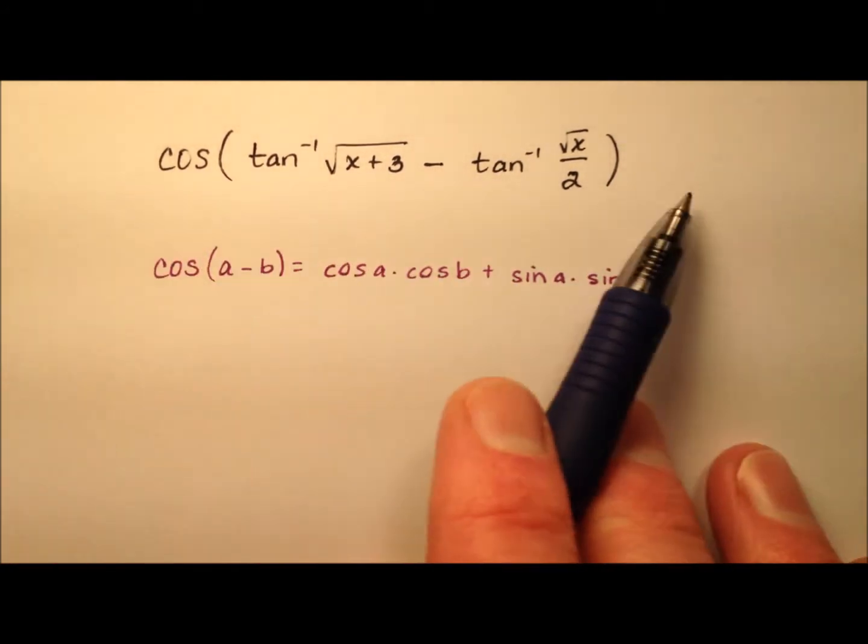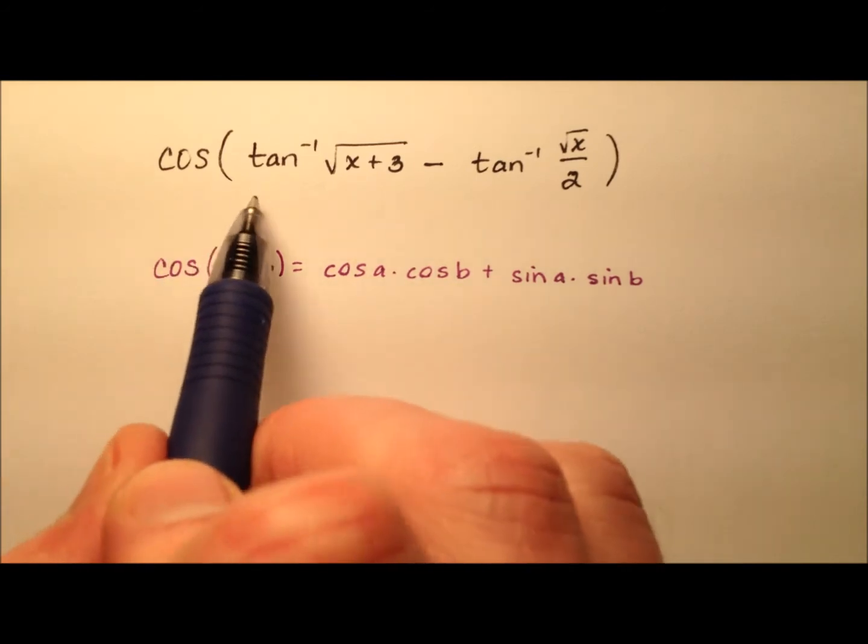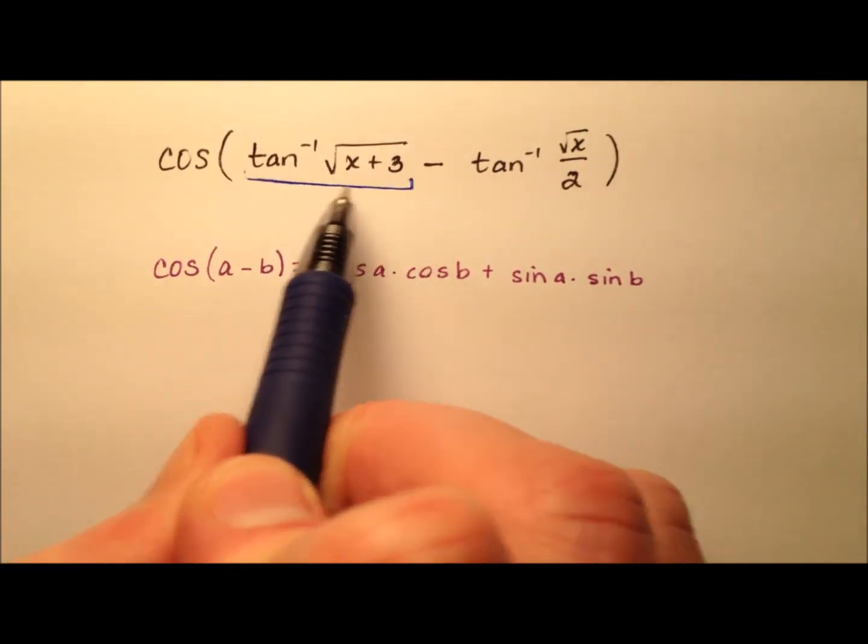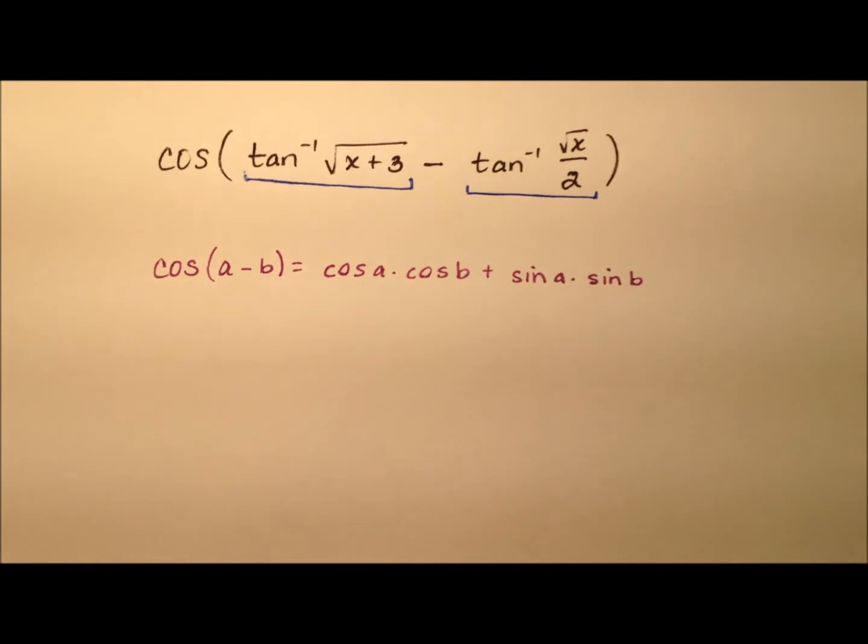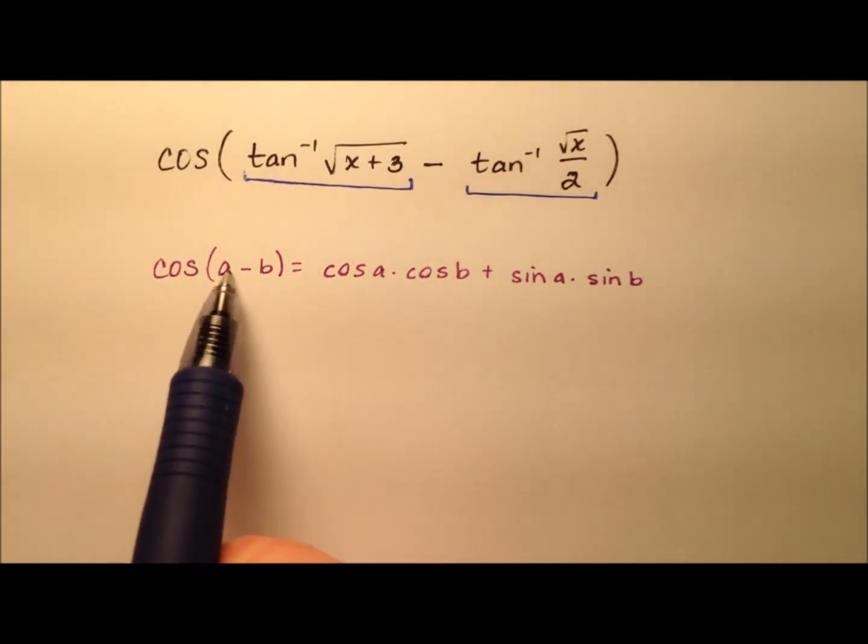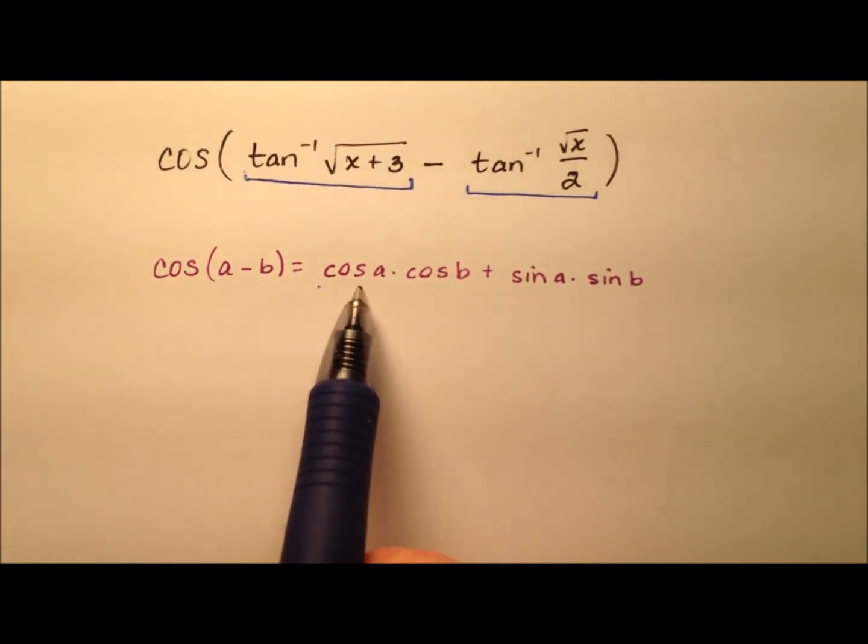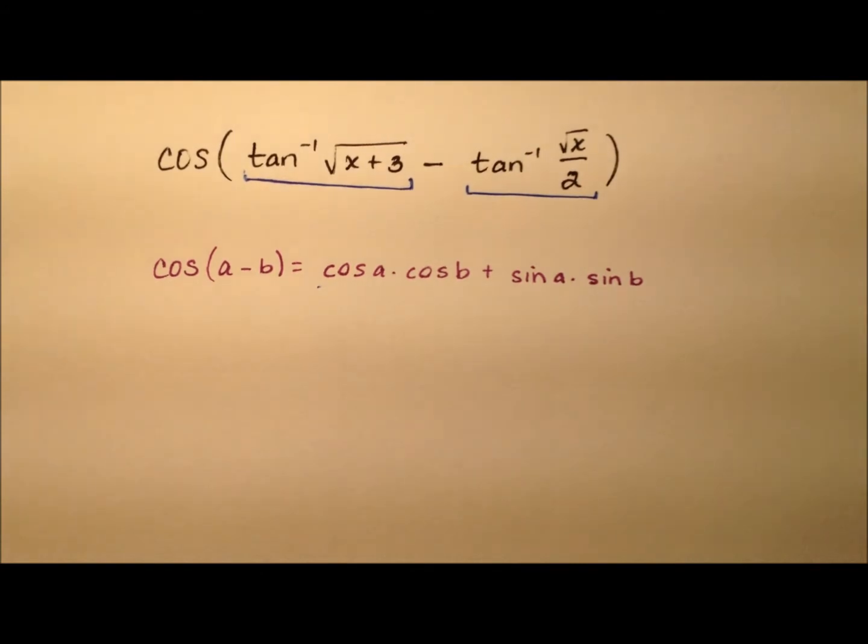Alright, so specifically here I have the cosine of this angle and I'm subtracting this angle. So it looks like I can use the difference identity for cosine that has this expansion. But before we get there, let's go ahead and draw a couple of reference triangles that we can use.